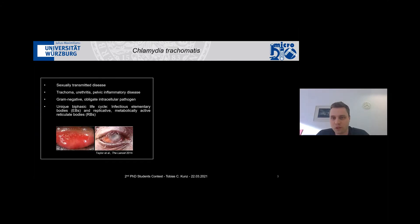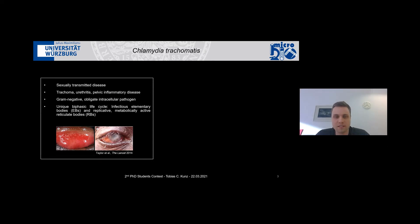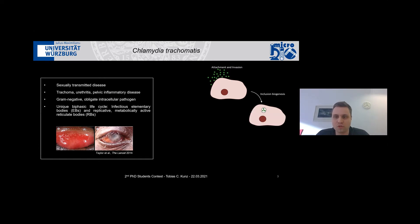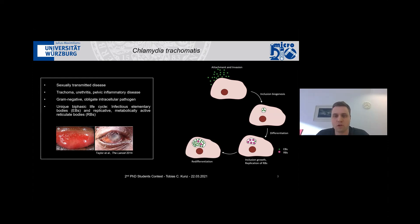Coming from the microbiology department, we are interested in pathogens and how they interact with the host. In my case, this is mostly Chlamydia trachomatis, which is the most common sexually transmitted bacterium. It is a gram-negative obligate intracellular bacterium, meaning it needs a host cell in order to replicate. It does this in a very unique biphasic life cycle, where the first form, a smaller so-called elementary body, attaches to and invades the cell, where it forms a vacuole called an inclusion, differentiates into a metabolically active and replicative form, replicates, and then re-differentiates back to the infectious form, which gets released from the host cell to infect further tissue.